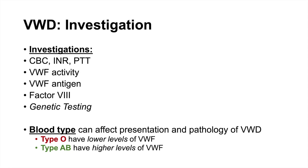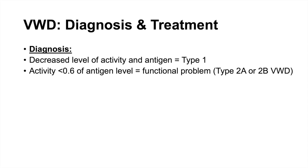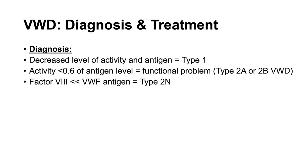Making the diagnosis comes down to the level of activity and the level of von Willebrand factor. Decreased level of both activity and antigen indicates type 1 — decreased amount but still present, interpreted in context of blood type. If activity is lower than 0.6 of the antigen level, that indicates a functional problem — type 2a or 2b. If factor VIII is much lower than von Willebrand factor, that is type 2n. No von Willebrand factor at all indicates type 3.